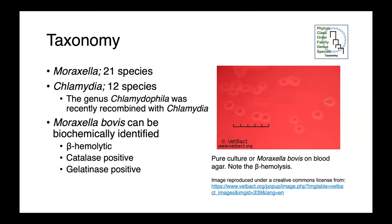We have 21 species of Moraxella, of which Moraxella bovis is our most impactful in veterinary medicine. Within the genus Chlamydia, we have 12 species, and this includes the recent re-agglomeration of several related genera back into Chlamydia. So Chlamydophila used to be considered distinct, and it's been re-clustered with Chlamydia — so we no longer have Chlamydophila psittaci; it's now Chlamydia psittaci.